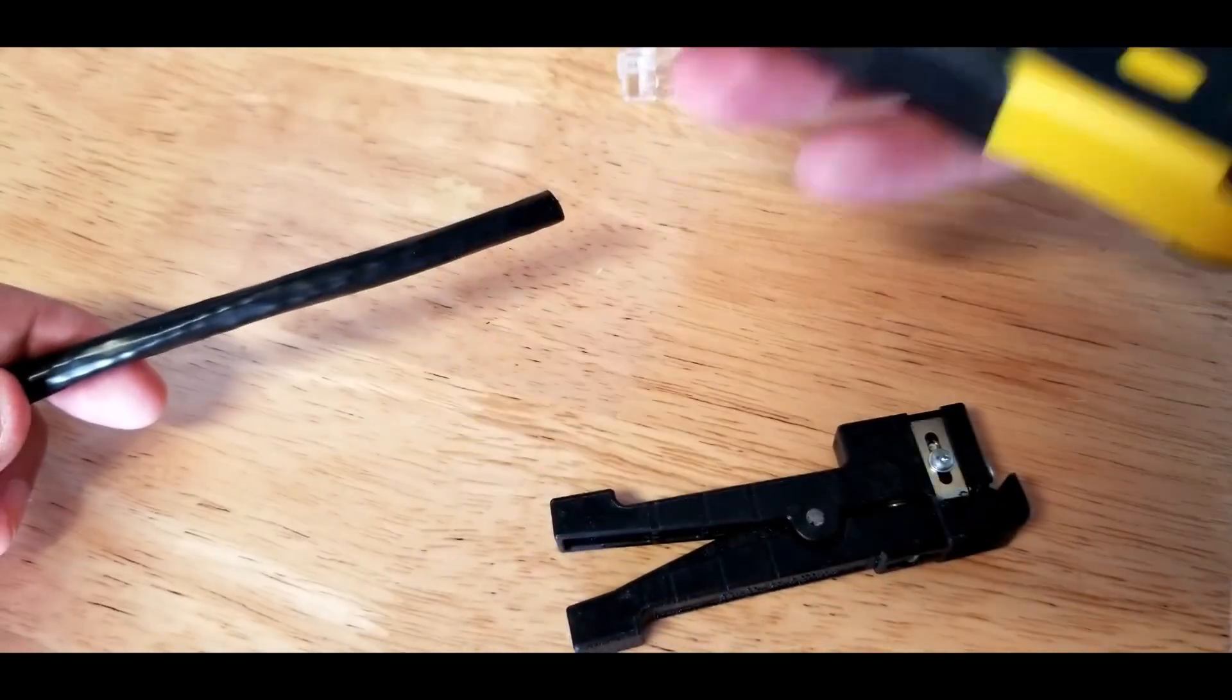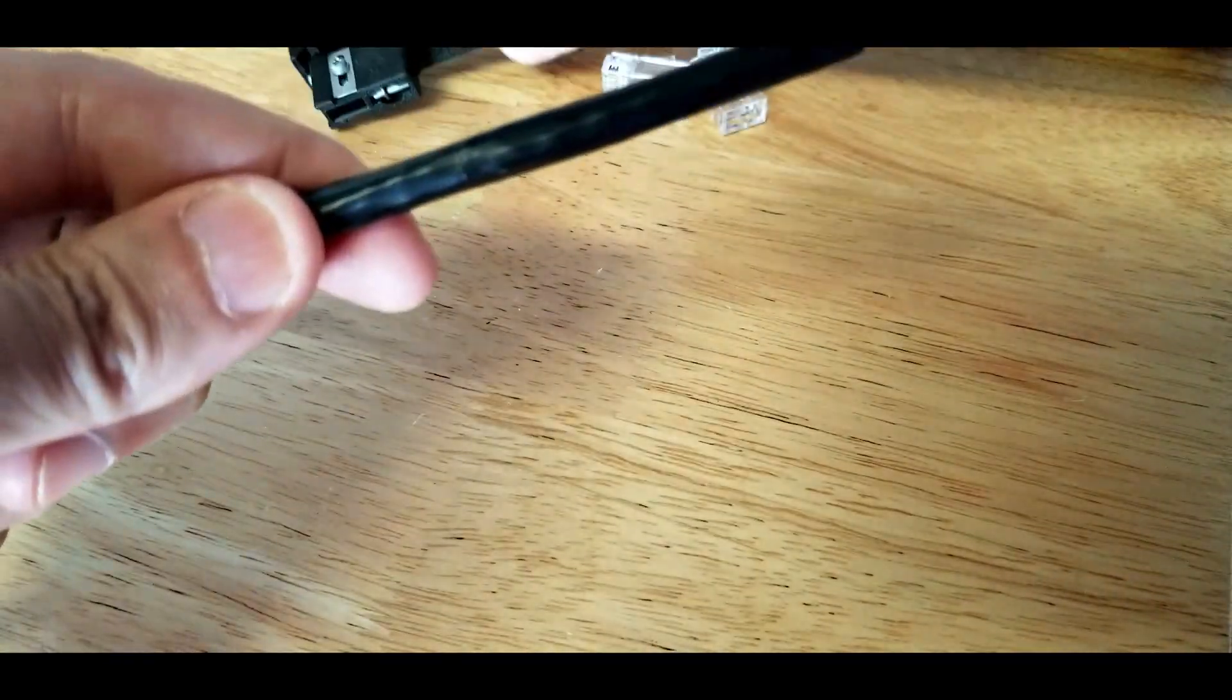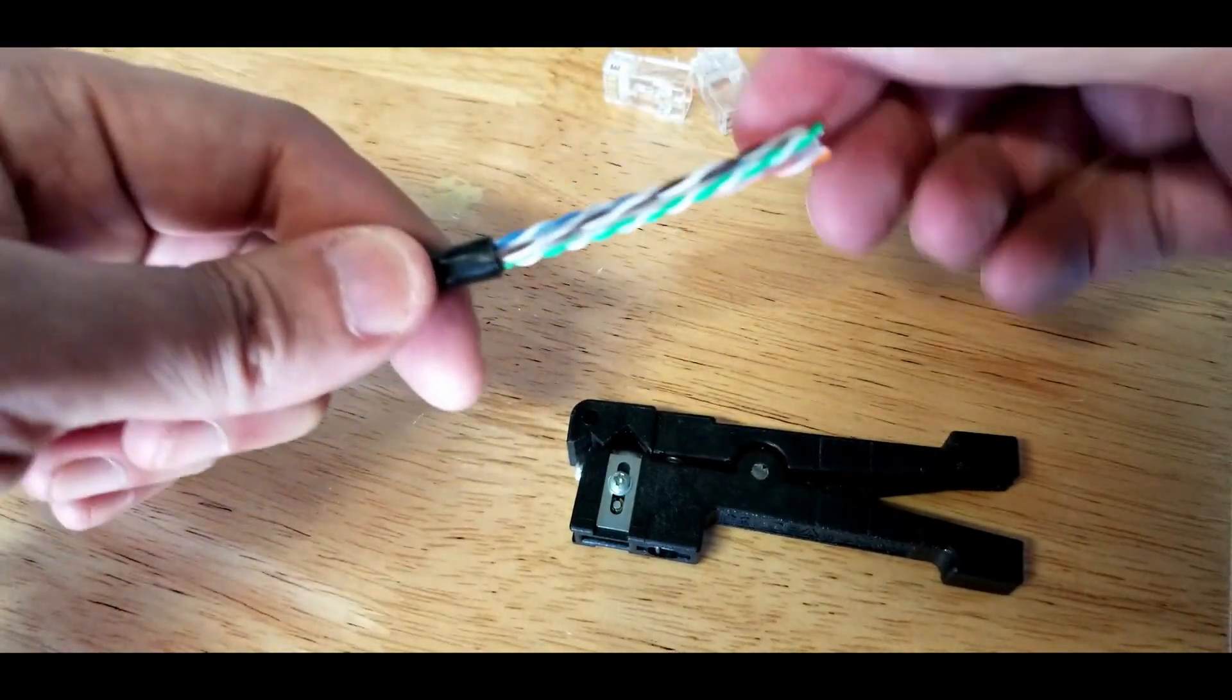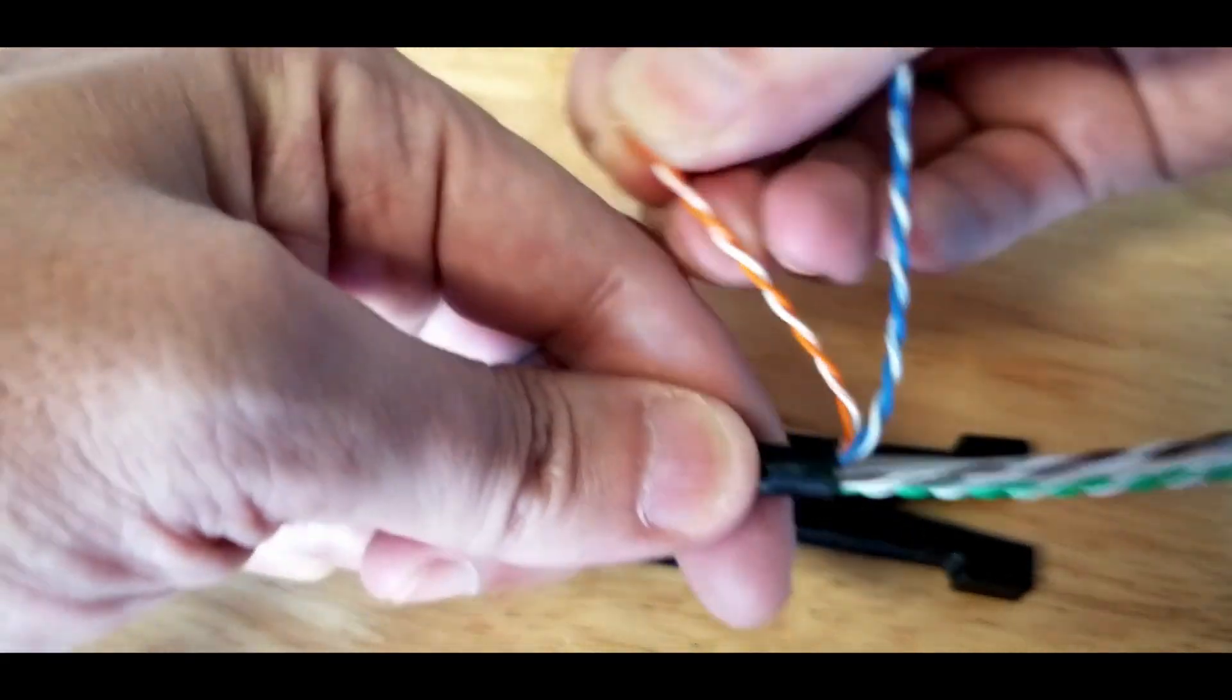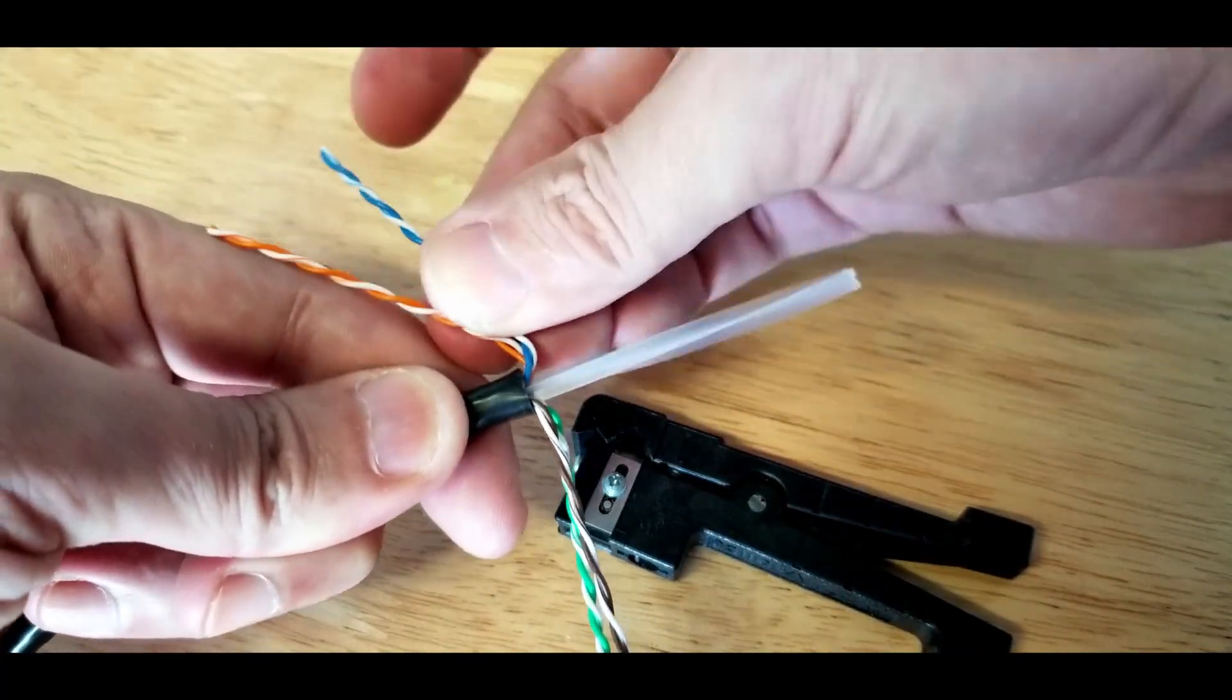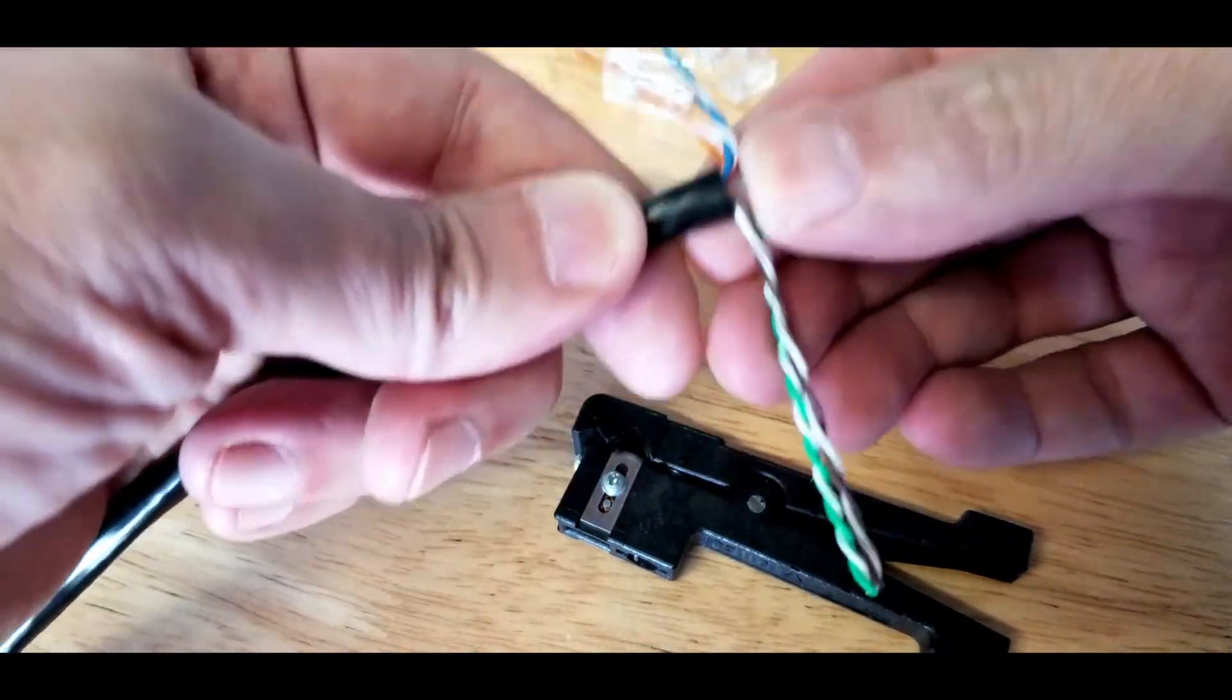Whenever you're using these strippers like this, you don't want to make sure that you don't cut the cable inside because you'll have problems. So I always go orange, blue, green, brown, kind of separate them out like that initially. Makes it a little bit easier in the future. Snap off that guide or whatever you want to call it. Be careful not to cut the data wires.